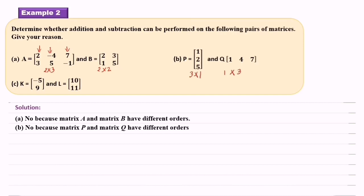Now we look at C. Matrix K equals [-5, 9]. The order of the matrix is 2 by 1. Matrix L also has order 2 by 1. So can we add or subtract? Yes, because matrix K and matrix L have the same order.